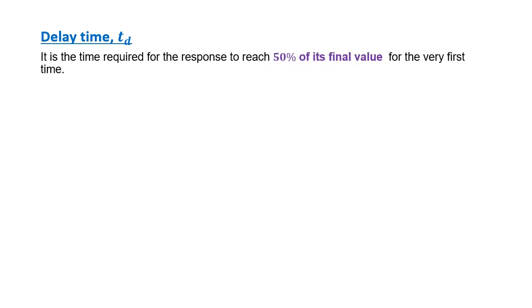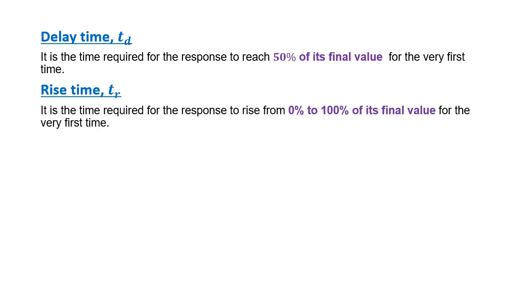Delay time — symbol TD — is the time required for the response to reach 50% of the final value for the very first time. Rise time — symbol TR — is the time required for the system to rise from 0% to 100% of the final value for the very first time.